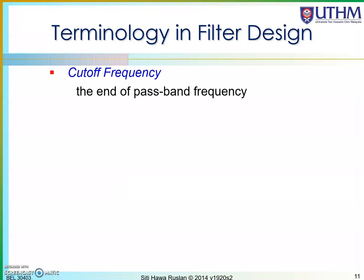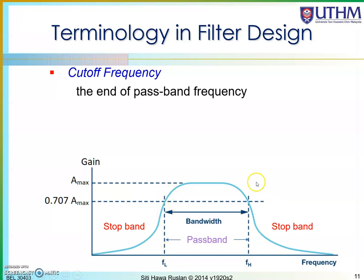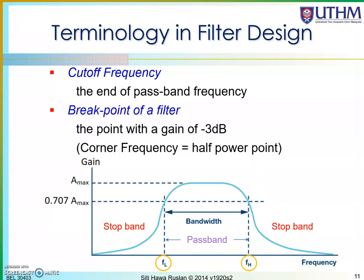The cutoff frequency marks the end of the pass band. For a band pass filter, there is a low cutoff frequency (fl) and a high cutoff frequency (fh). For a low pass filter there is only a high cutoff, and for a high pass filter there is only a low cutoff. These distinguish the pass band from the stop band and are sometimes called the breakpoints of a filter. The gain at the cutoff is minus 3 dB from the top, associated with the half power point.